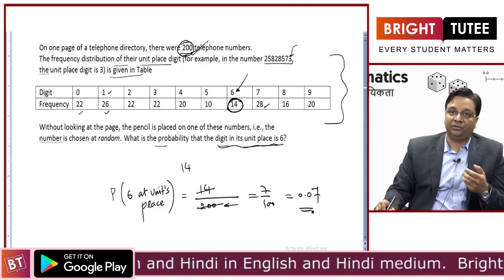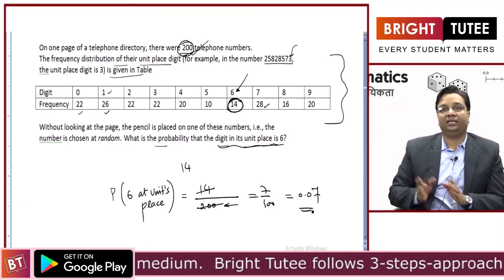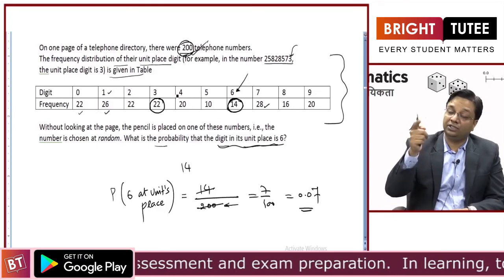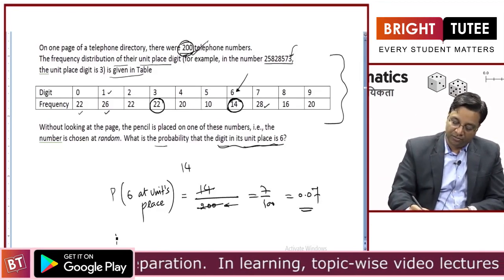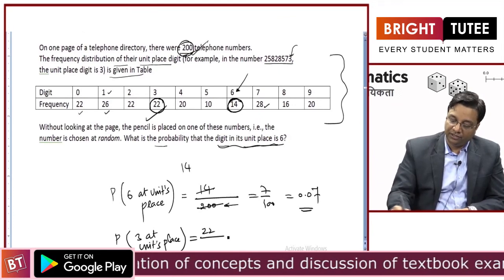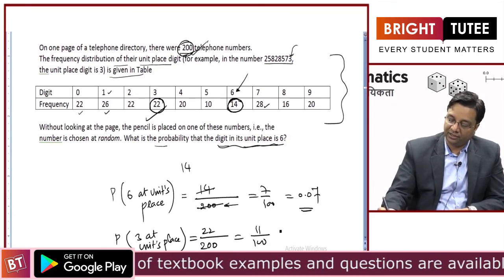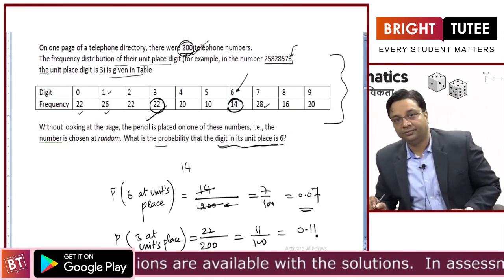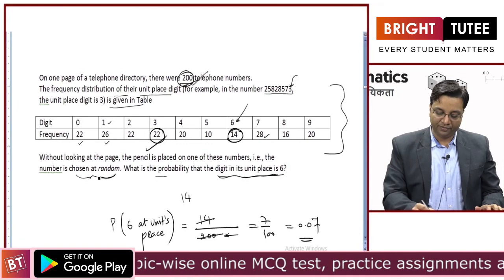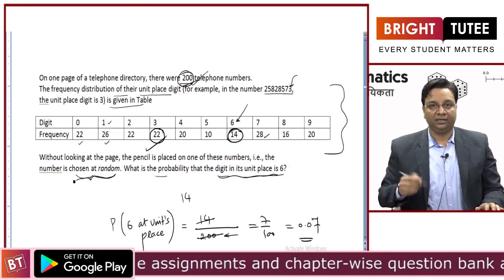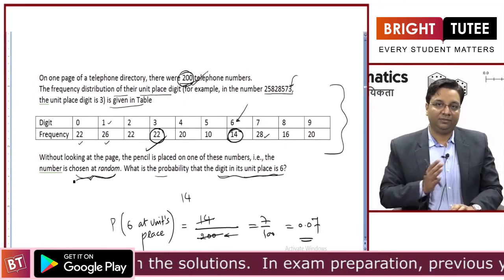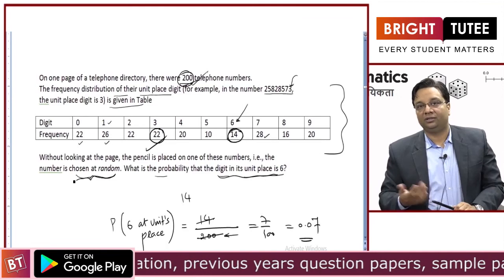Similarly, what is the probability of 3 appearing at the units place? There are 22 times 3 appeared at the units place out of these 200 telephone numbers. So probability of 3 at units place = 22/200 = 11/100 = 0.11. The number is chosen at random so that we are not favoring a particular outcome — if I look at the numbers and place my pen intentionally, the experiment will be biased toward a particular number.